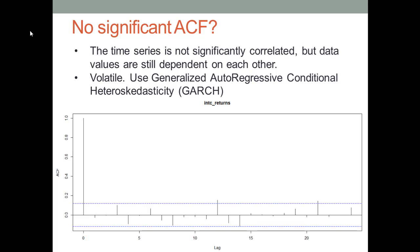When you see an ACF chart like this where none of the spikes is significant, you should immediately think that this time series is volatile. For volatile datasets, we use the GARCH model to process the data. Stock prices are volatile because each company's stock price is influenced by so many unexpected events very frequently, so they change very frequently. Therefore, GARCH is a very good model for analyzing stock prices.